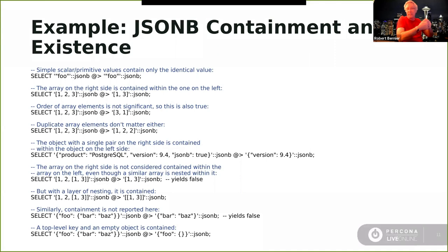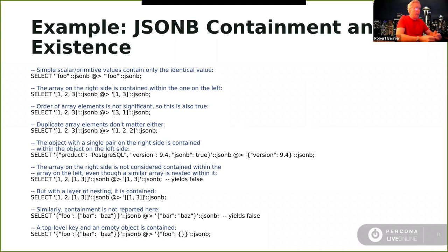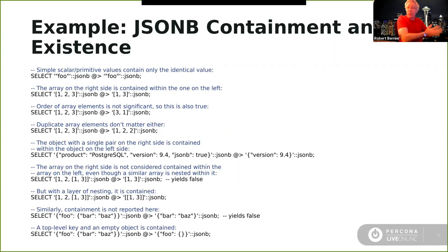JSONB specializes in containment and existence. These examples demonstrate querying — if you're comfortable with standard Postgres queries, moving to JSON querying is a very slight shift. The `@>` operator is the most common; it's equivalent to the WHERE criteria. On both sides of the operator, values are cast as JSONB types. When you have tables already typed as JSONB, you won't need to cast explicitly.